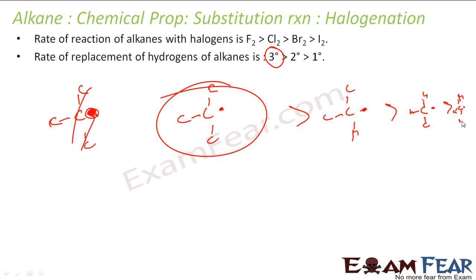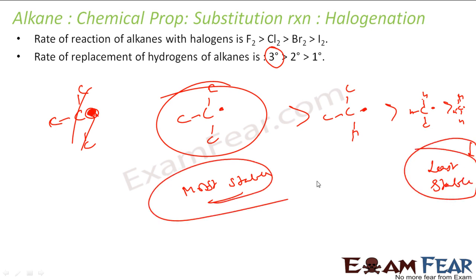The 3° free radical is a stable free radical intermediate. The 2° radical is less stable, and the 1° radical is all the more unstable. Since 3rd degree carbon free radicals are more stable, replacement at tertiary carbons is easier and you get more products from those positions. As we discussed in the previous chapter, the intermediate plays a critical role in deciding which product is formed more.